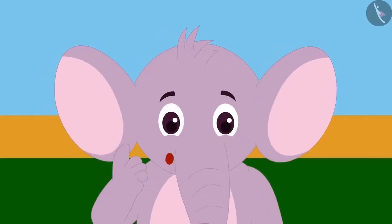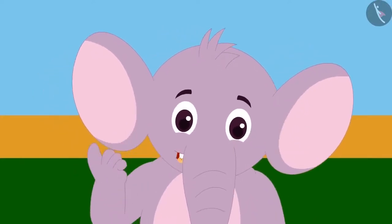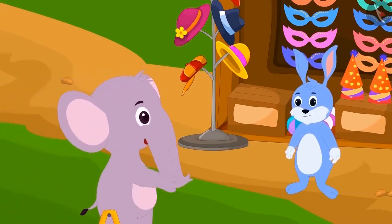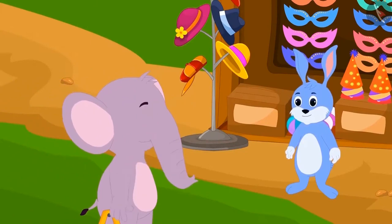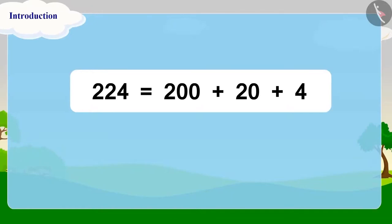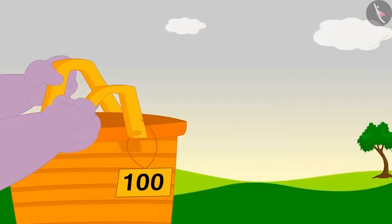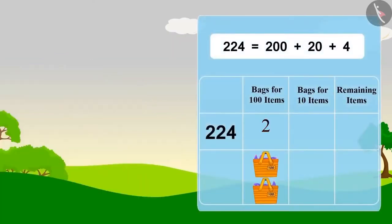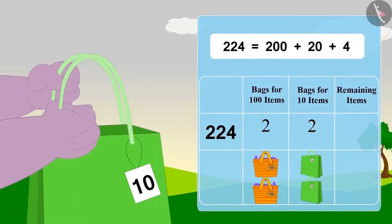Appu says, give these bags to me too — they will be very useful! After taking the bags, Appu reaches Bunny's stall and asks for 224 masks. Children, can you write 224 in expanded form? Yes, you have written it correctly. This time Appu first puts forward 2 bags of 100, then 2 bags of 10.